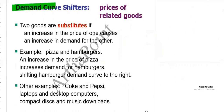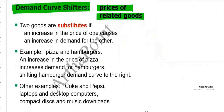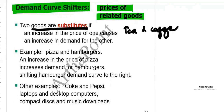The next factor to consider is the price of relative goods. We want to introduce something known as substitutes, like tea and coffee. If the price of tea increases, people will shift to coffee.